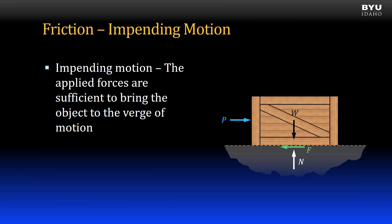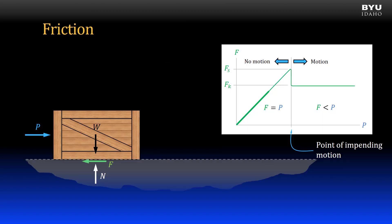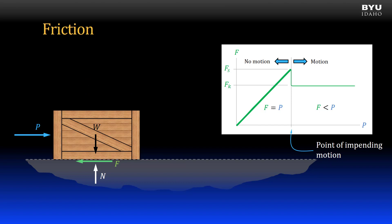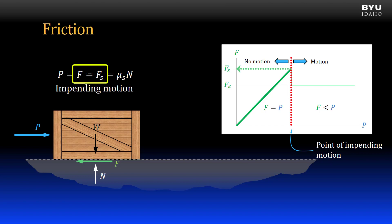Many of the friction problems we look at will incorporate the condition of impending motion. When we have impending motion, the applied forces on an object are sufficient to bring the object to the verge of motion. If the applied forces don't bring an object to the verge of motion, then the friction force is less than the static friction force — in other words, there is no impending motion. However, if the applied forces bring the object to the verge of motion, then the friction force is equal to the static friction force found using the equation mu sub s times N.